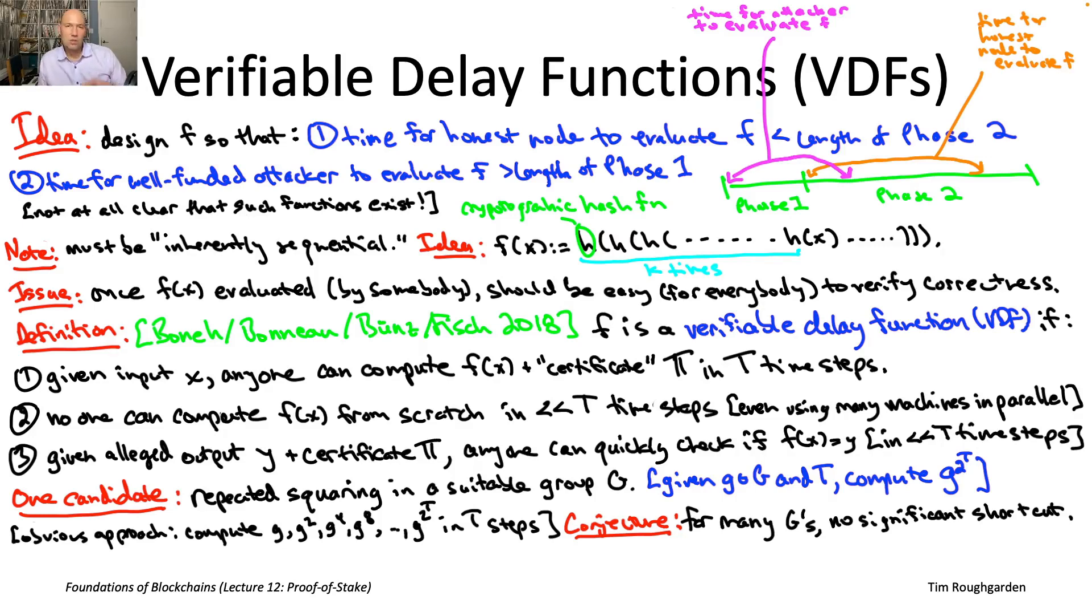So for the rest of this video, let's just assume that the conjecture is true. Okay? So then we have properties both one, by construction, and two, by assumption. What about property three?